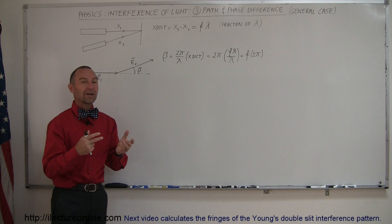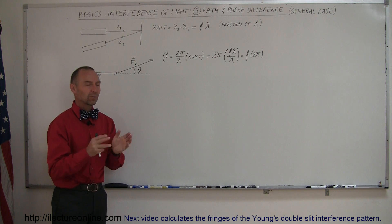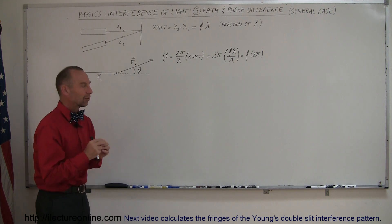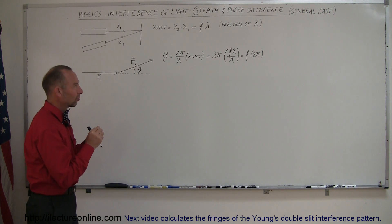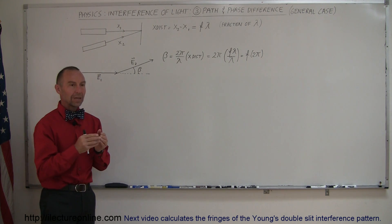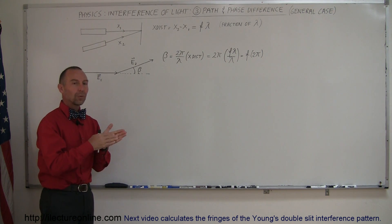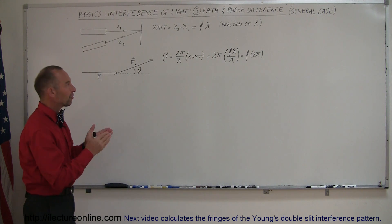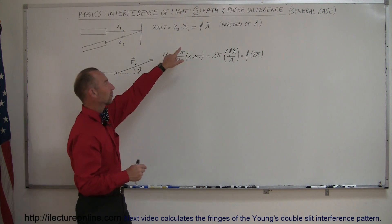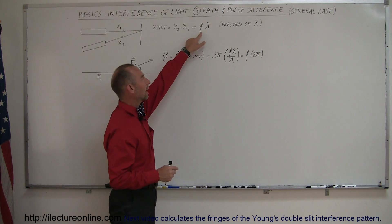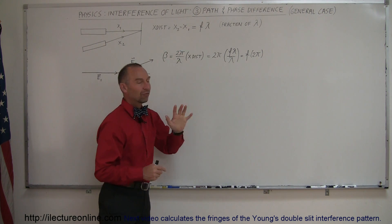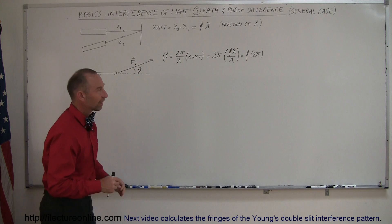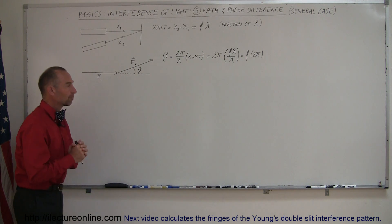It could be many wavelengths plus a fraction, but let's take the case where the difference is just somewhere between zero and one whole wavelength — so a fraction of a wavelength. We use the letter F to indicate that fraction of a wavelength difference.